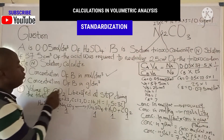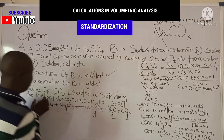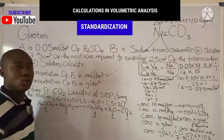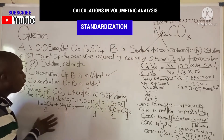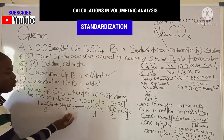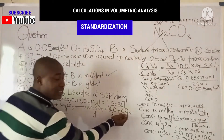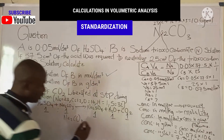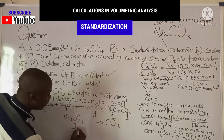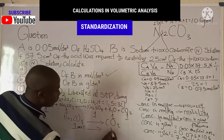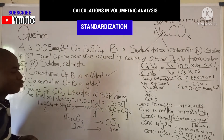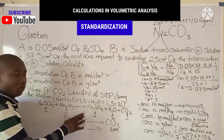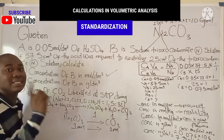The next part asks us to calculate the volume of carbon dioxide liberated at STP during the titration. To solve this, we relate Na₂CO₃ to CO₂ using the balanced equation. From the equation, 1 mole of Na₂CO₃ produces 1 mole of CO₂.